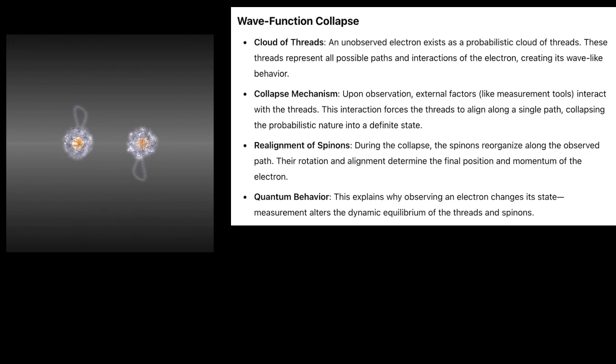Quantum Behavior: This explains why observing an electron changes its state. Measurement alters the dynamic equilibrium of the threads and spinons.